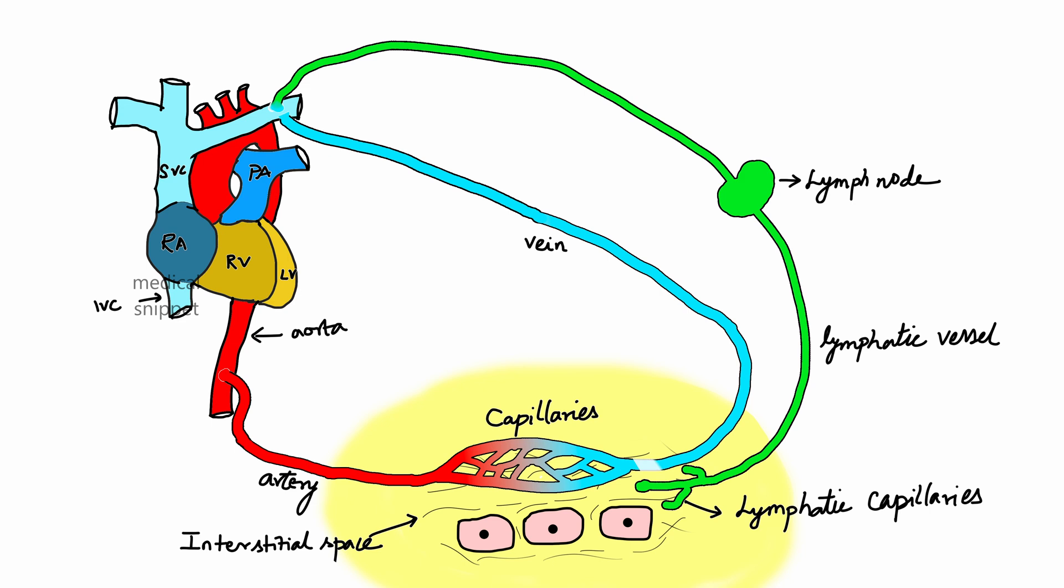The main function of lymph node is filtering the lymph collected from tissues and returning it to the circulatory system. During this filtering action of lymph node, the B cells and T cells are exposed to a variety of antigens. This plays a role in adaptive immunity. This completes the structure and function of the lymph node. Hope the video was useful. See you soon in the next video.